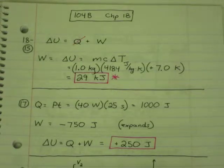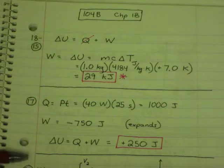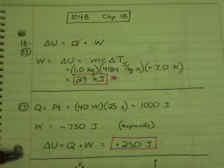So delta U then is Q plus W, change of positive 250 joules.